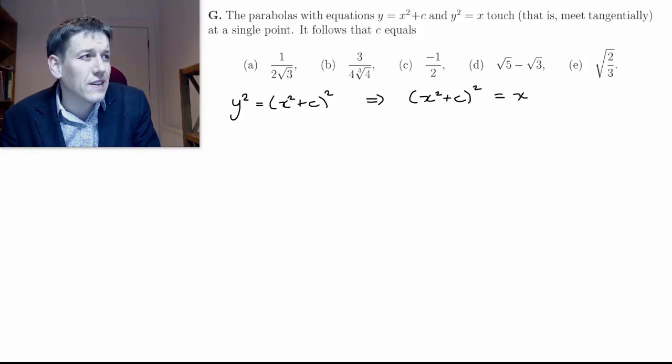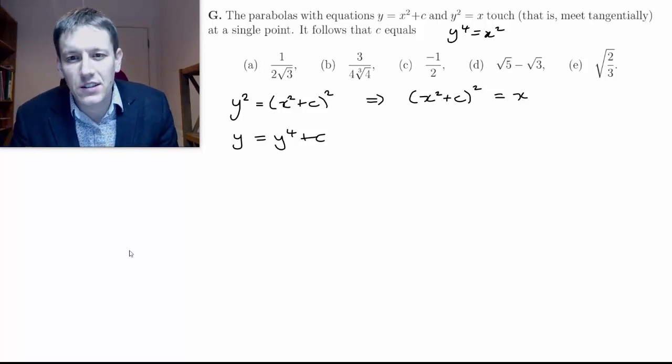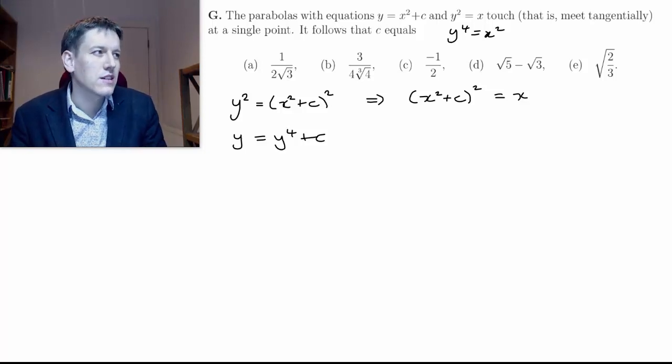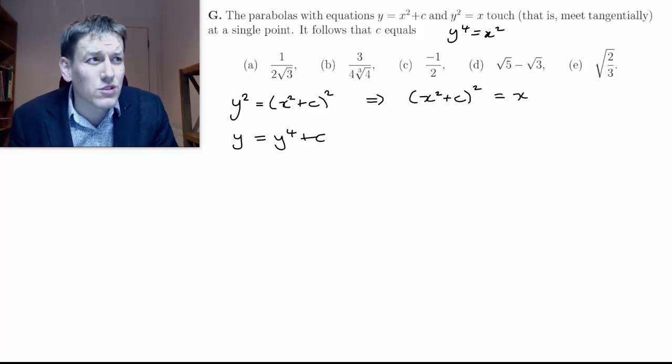Alternatively we could write the second one as y⁴ = x² and then substitute that in for x² over here, so I'd have something like y = y⁴ + c. The thing to notice here is that neither of these are particularly nice. One way of solving a question that says we've just got a single intersection is that I might be able to do some rearrangement of one of these equations and say they have a repeated root somehow, and that means they've just got this one intersection.